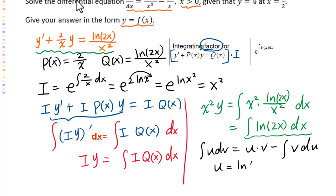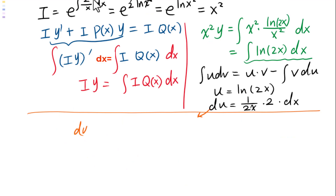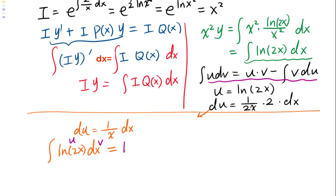Let u equal natural log of 2x. Then du equals 1 over 2x times 2 dx, so du equals 1 over x dx. For the integral of natural log of 2x dx, using the formula with u and v: u times v equals natural log of 2x times x minus the integral of x times 1 over x dx.